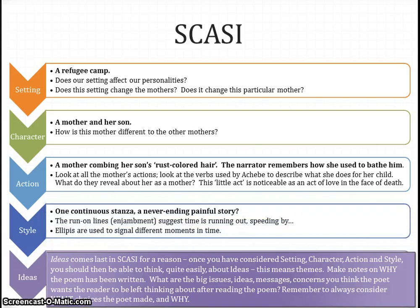For style, you would want to consider that this is one continuous stanza. Is this perhaps reflecting a never-ending painful story? There is no break to their suffering — it could also suggest that the end is very near and the child's death is imminent. You'll notice there are run-on lines — this is where we have enjambment, where there's no punctuation at the end of the line. Does this suggest that time is running out and speeding by? You'll also notice the use of ellipses, which signal different moments of time within the narrative of the poem.